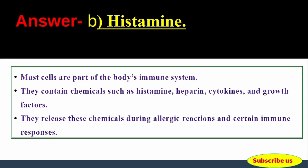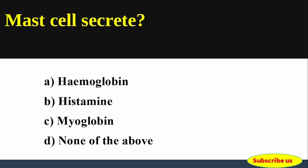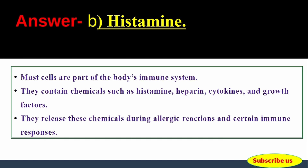Answer: Option B, Histamine. Mast cells secrete histamine. Mast cells are part of the body's immune system. They contain chemicals such as histamine, heparin, cytokines, and growth factors.